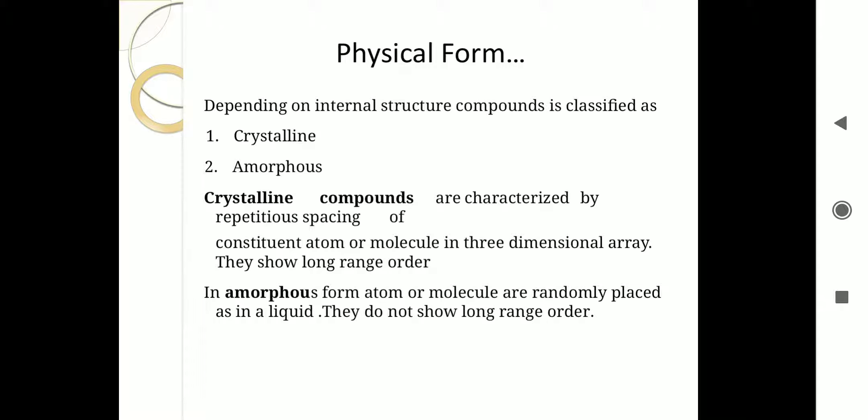This differentiation is on the basis of the internal structure. Crystalline compounds are characterized by the repetitious spacing of constituent atom or molecule in a three-dimensional array. In crystalline compounds, the atoms or molecules are arranged in a proper pattern with repetitious spacing in a three-dimensional array. Repetitious means that the pattern repeats again and again. Their structure is in proper order, in a pattern.